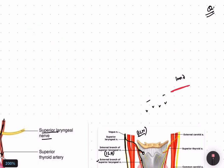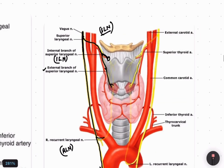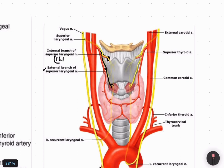The internal laryngeal nerve pierces the thyrohyoid membrane and supplies the sensory innervation to the upper part of the larynx, above the vocal cord. Below the vocal cord, sensory supply is provided by the recurrent laryngeal nerve, which takes sensations from the lower half of the larynx.